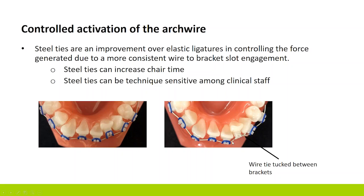You can use a steel tie to mimic that amount of deflection you've seen in self-ligation, though it's probably not identical because you're not pushing against the slot. But then you've got all these little ties that you have to tuck in. Do your patients ever have problems with little steel ties? Sometimes they do when they go to floss, or if not properly tucked it could poke the lip. It's something you can use to activate an archwire, but it's very technique sensitive — some staff members, and even myself, are better on one side than the other depending on whether you're left or right handed. And it obviously increases chair time.